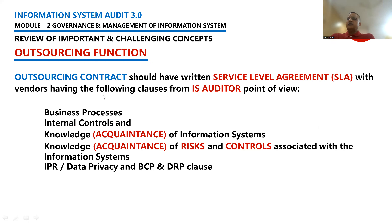As an IS auditor, when you are auditing any outsourcing functions as far as governance of any organization is concerned where information technology processes are being implemented, you should look into business processes and internal controls that have been implemented. You should have knowledge of information systems, knowledge of risk and controls associated with information systems, intellectual property rights, data privacy, business continuity processes, and disaster recovery plans. These are the things which are essential for an IS auditor when talking about an outsourcing contract.